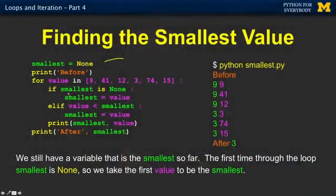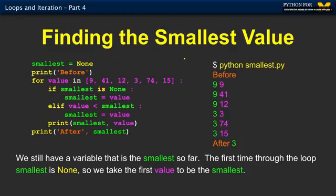We can say: is the contents of smallest none? If smallest is none — 'is' is more powerful than double equal sign. It means 'is it exactly the same as?' So if we're asking 'is smallest none,' that's only true if we have a none in there. If we put 17 in, smallest is not none. So this is how it works — you start with smallest equals none.